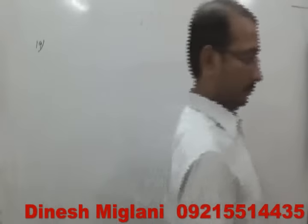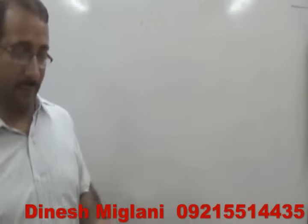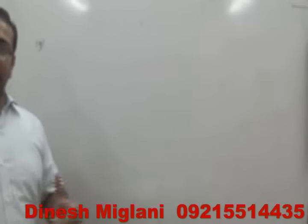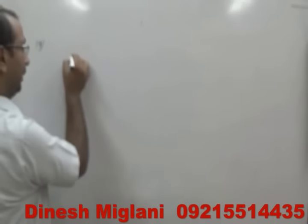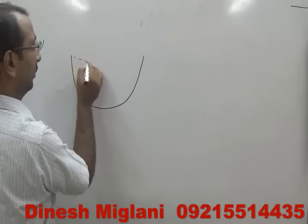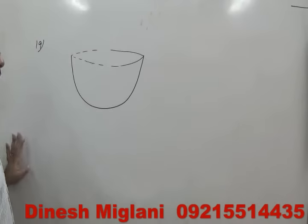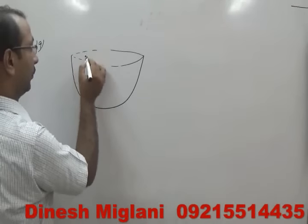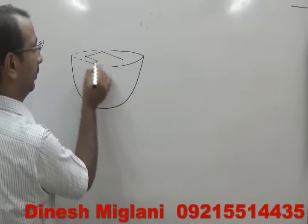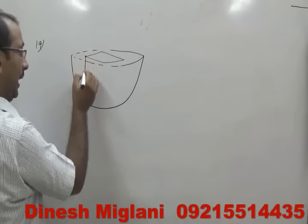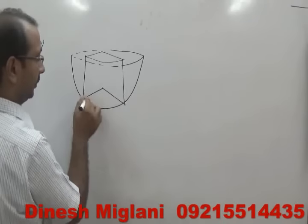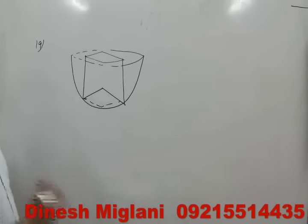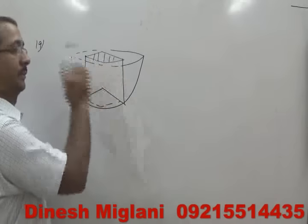Concept number 20: a square inscribed in a triangle with sides 10, 17, and 21, where one side of the square lies on the base. First, find the area using Heron's formula: s = (10 + 17 + 21)/2 = 24. Area = √(24 × 14 × 7 × 3) = √(7056) = 84. Then the height from the base 21 is found from (1/2)(21)(h) = 84, giving h = 8.